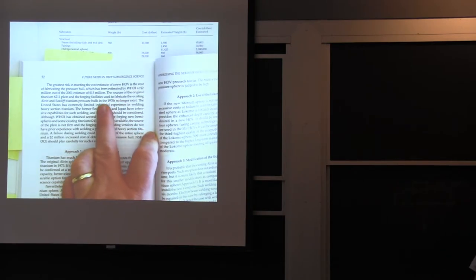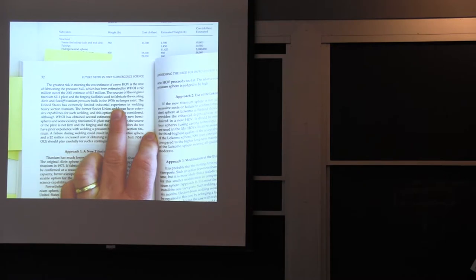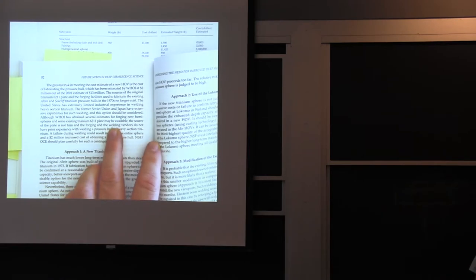The sources of the original titanium plate and the forging facilities used to fabricate the Alvin and Seacliff titanium pressure hulls in the 1970s no longer exist. The United States has extremely limited industrial experience in welding heavy section titanium. Soviets and the Japanese have some. We could go over there and have them build it for us. Soviets could have done a great job, believe me.